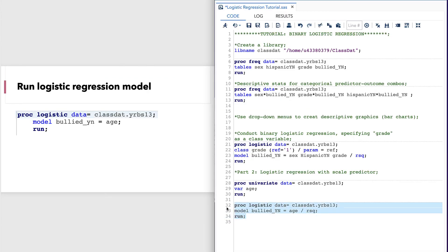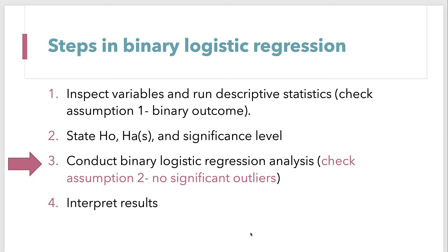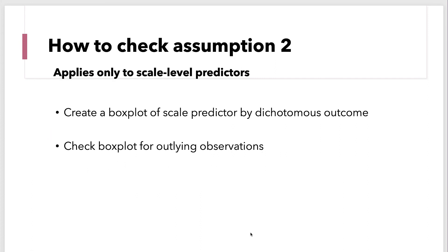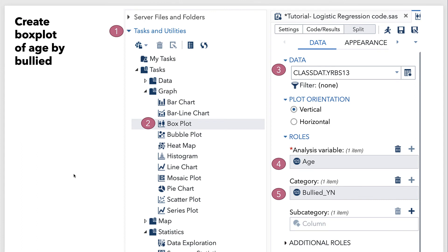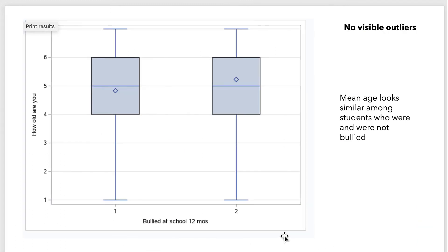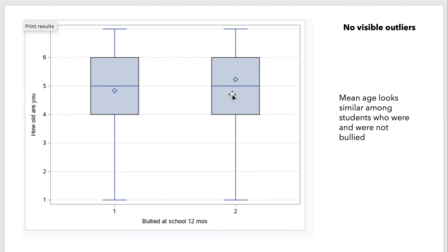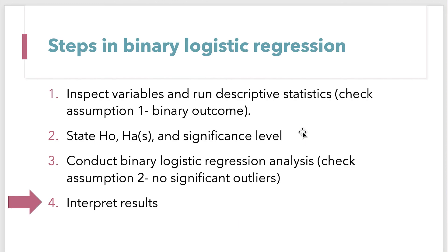Let's go ahead and run it. Before we interpret the results, we need to check assumption two: no significant outliers. This assumption applies only to scale-level variables; we don't need to do it for categorical variables. The way we check assumption two is to create a box plot of the scale predictor by the dichotomous outcome and check that box plot for outlying observations. We'll create a box plot using the drop-down menus in tasks and utilities. We can see that mean age looks similar for students who were and were not bullied, and we don't see any visible outliers.